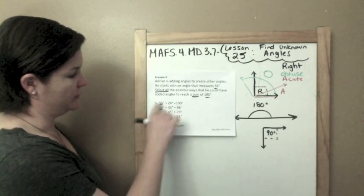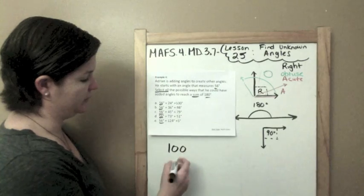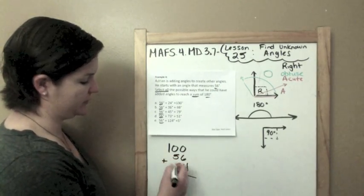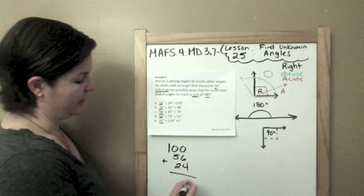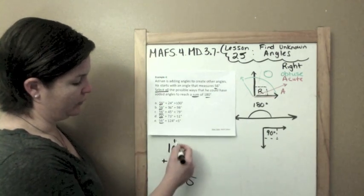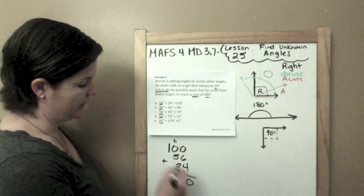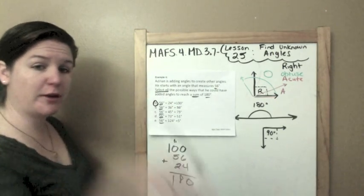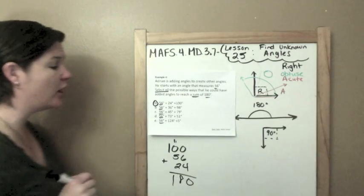All right, 180. So let me start with this one. So I have 100. I'm going to start with the greater number just to make it easier for myself. That's 10. 1 plus 7 is 8. Bring down the 1. That's 180 degrees. So A is an answer, but I'm not stopping there because I need to select all of them.